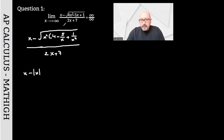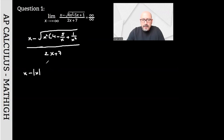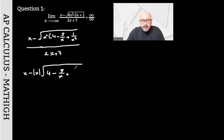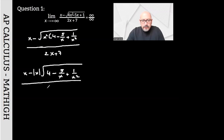The reason we chose to let x approach negative infinity in the question is to be able to show you this. I will explain the difference again shortly. Inside the square root, we have 4 minus 5 divided by x, plus 1 divided by x squared, divided by 2x plus 7.